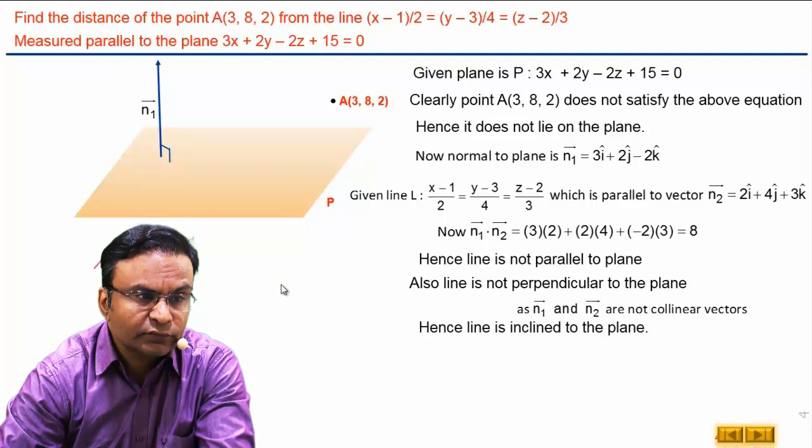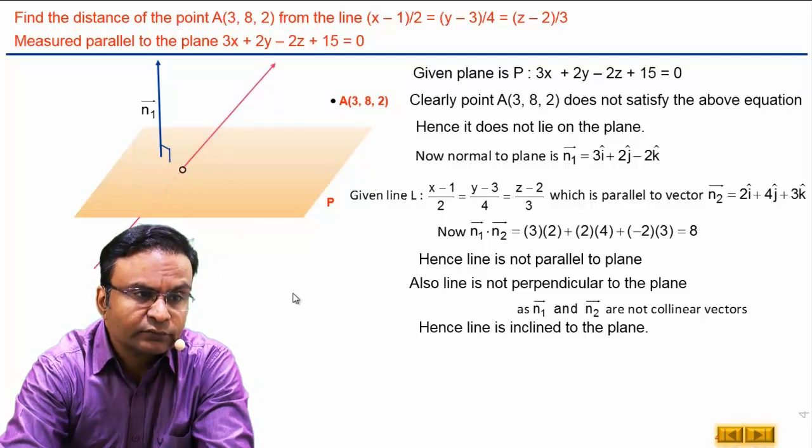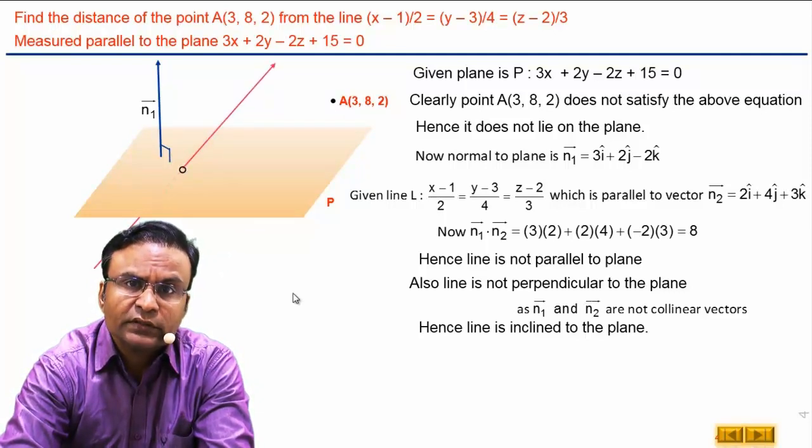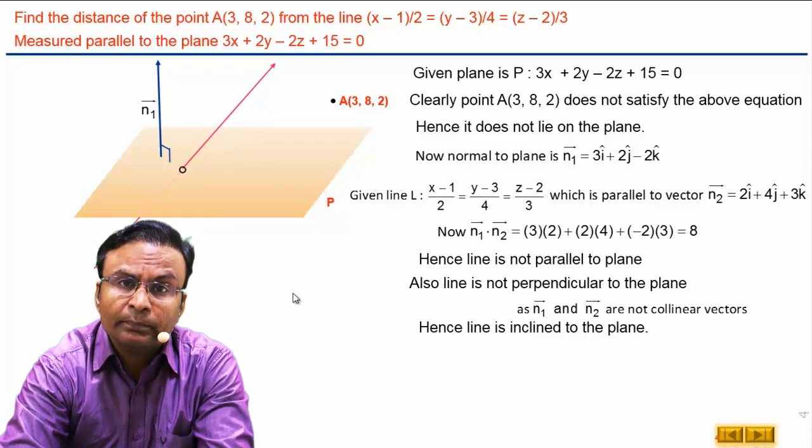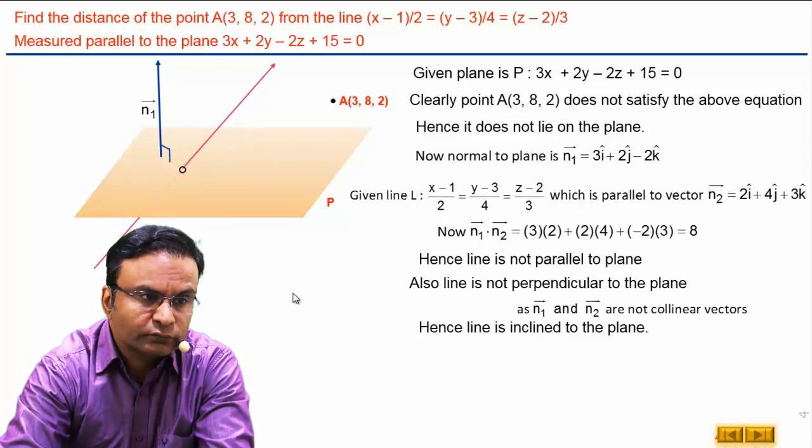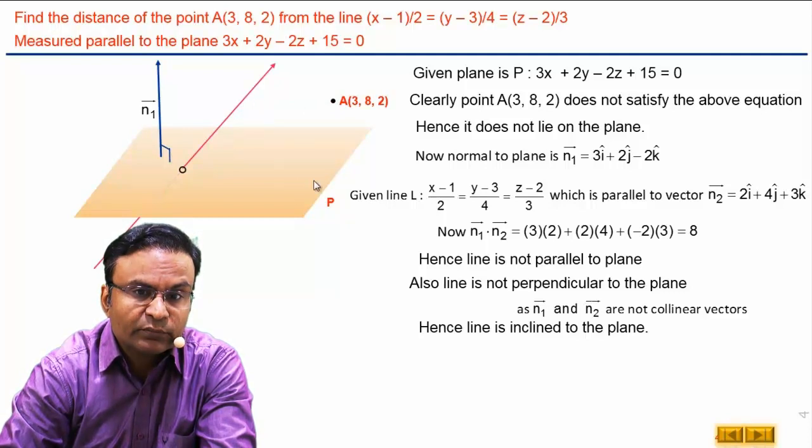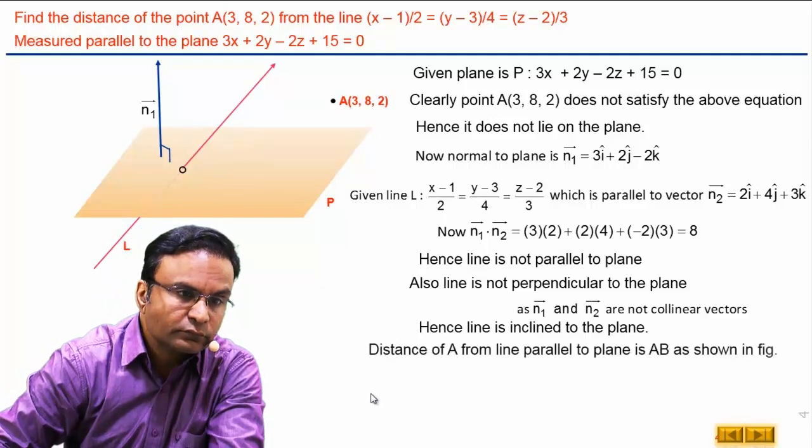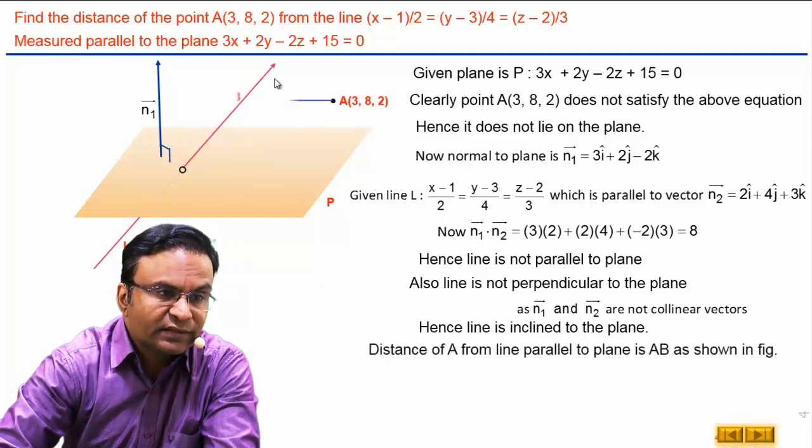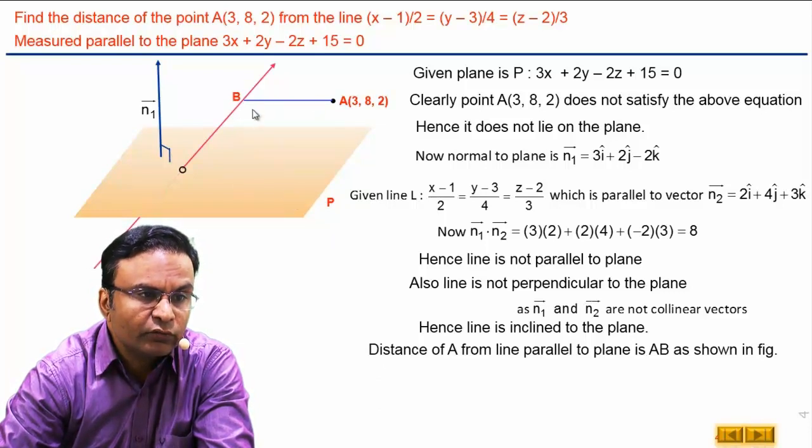Let us draw the line. Here is the line L which is inclined to this plane. Inclined means it is not perpendicular to the plane and also not parallel to the plane. Now, we want to find distance of this point from this straight line which is measured parallel to plane P. Here is the distance AB which is parallel to this plane. We want to find this distance.